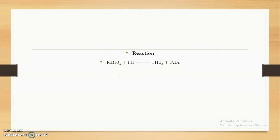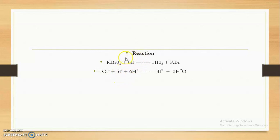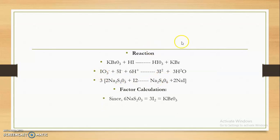The reaction: potassium bromate (oxidizing agent) reacts with potassium iodide, leading to formation of potassium bromide. Further, the liberated iodine reacts with iodide ions generated from HI, producing 3 moles of iodine. These 3 moles of iodine are then titrated against sodium thiosulphate, leading to formation of sodium tetrathionate.